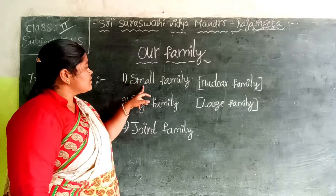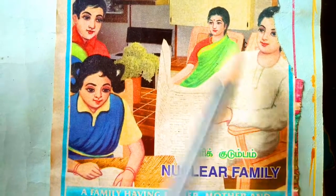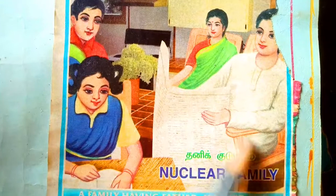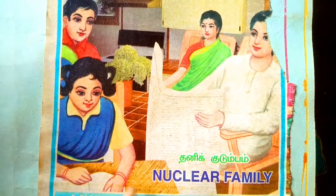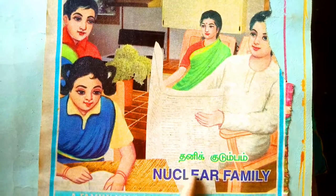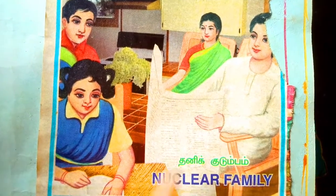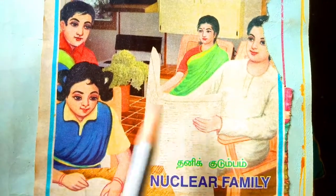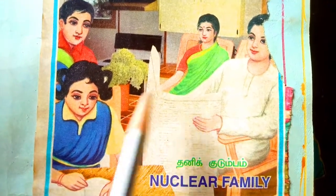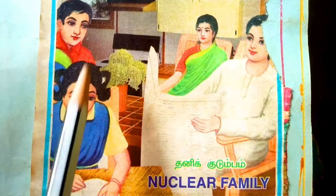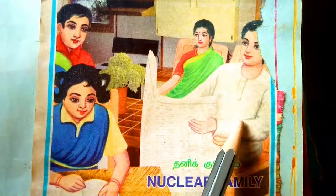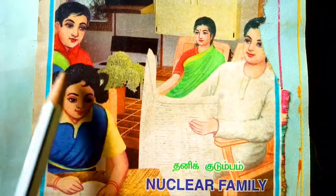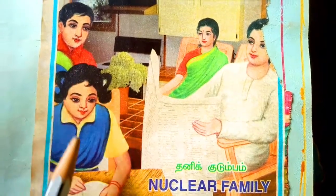See the picture, children. The first one is a small family. Small family is called nuclear family. Small family means a family having mother, father, and one or two children.